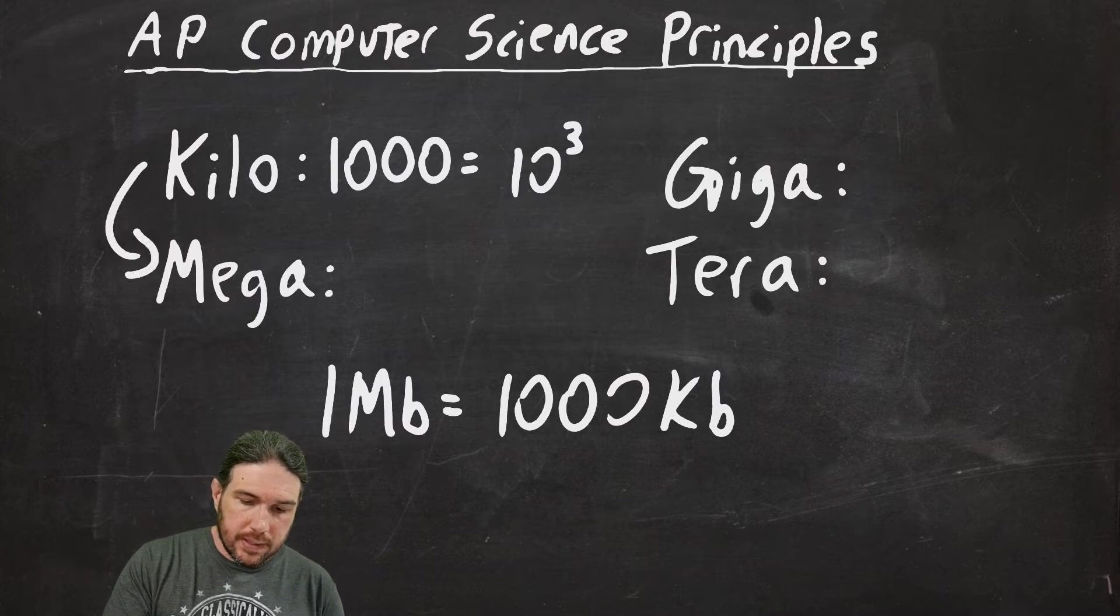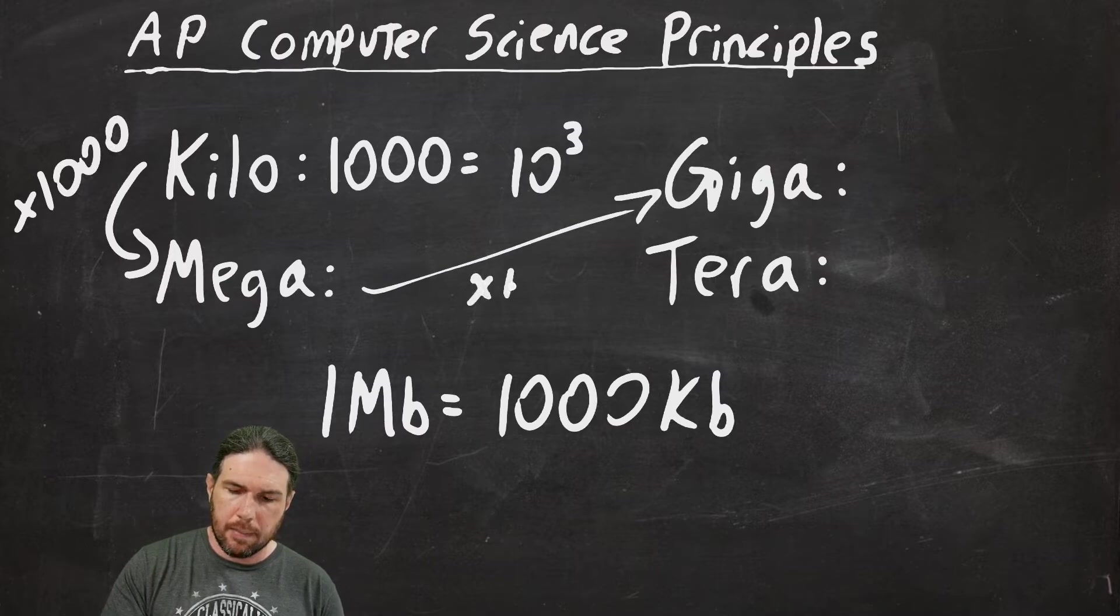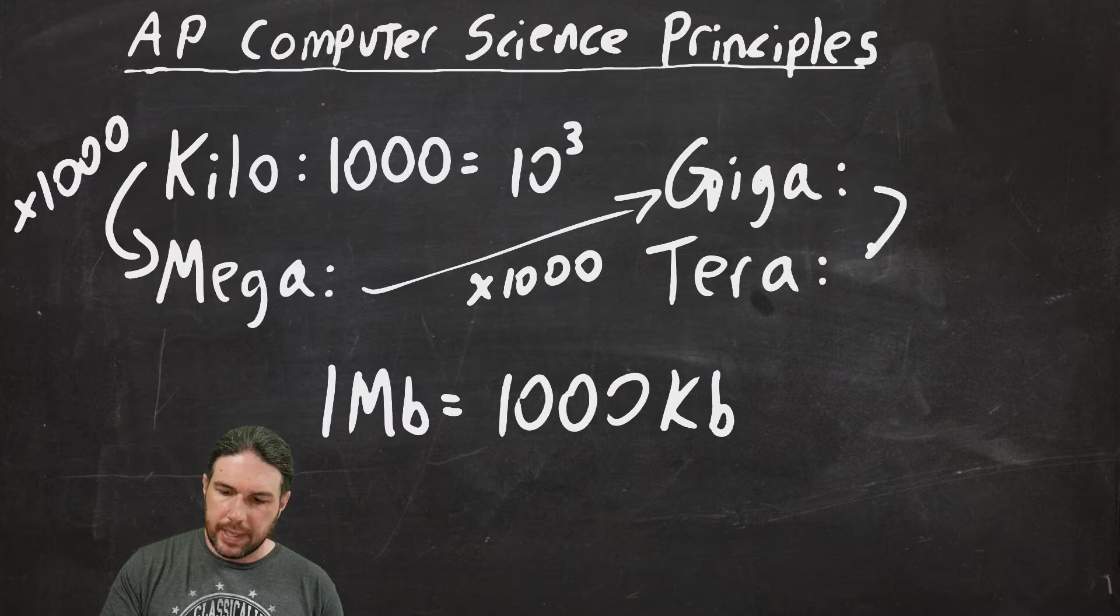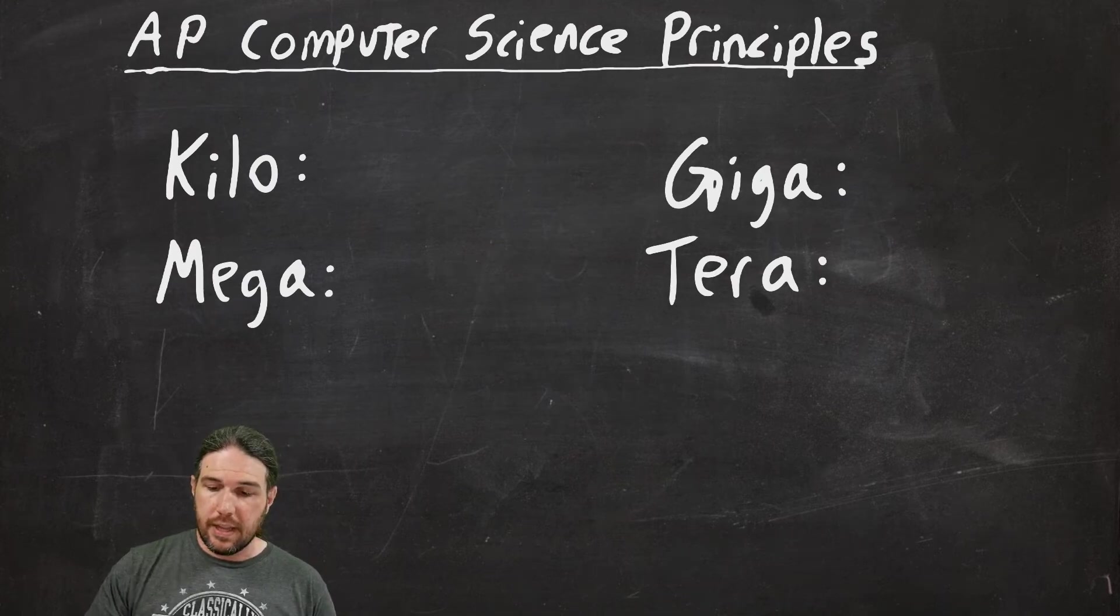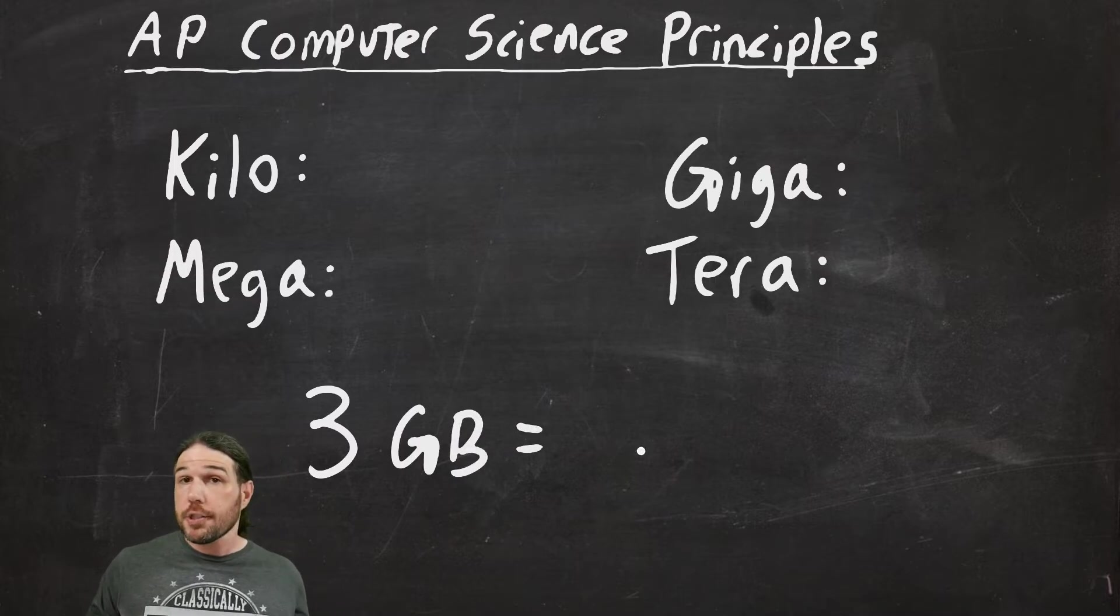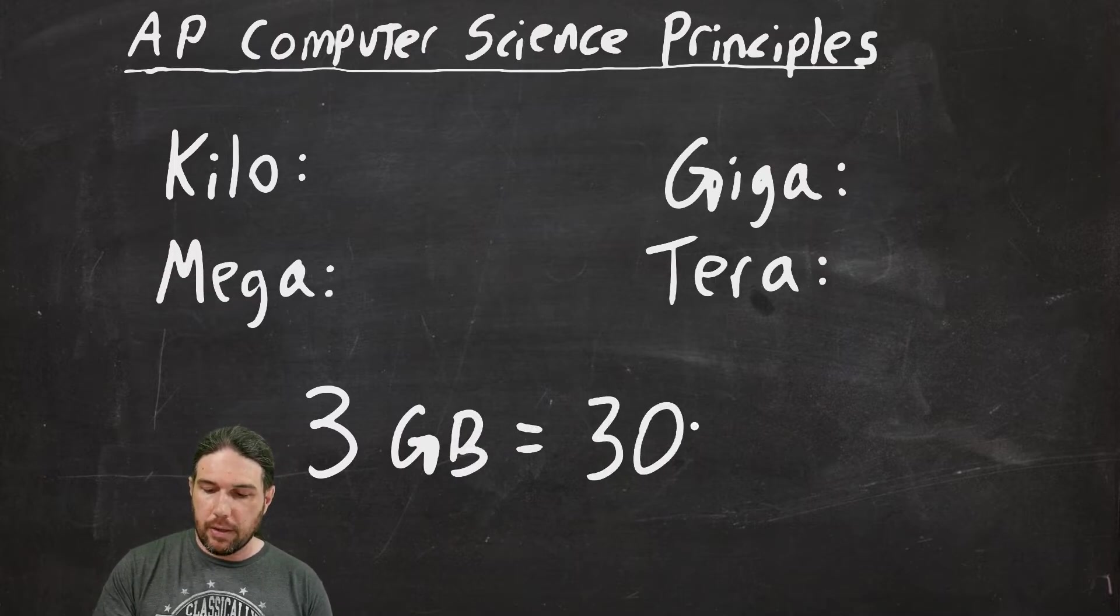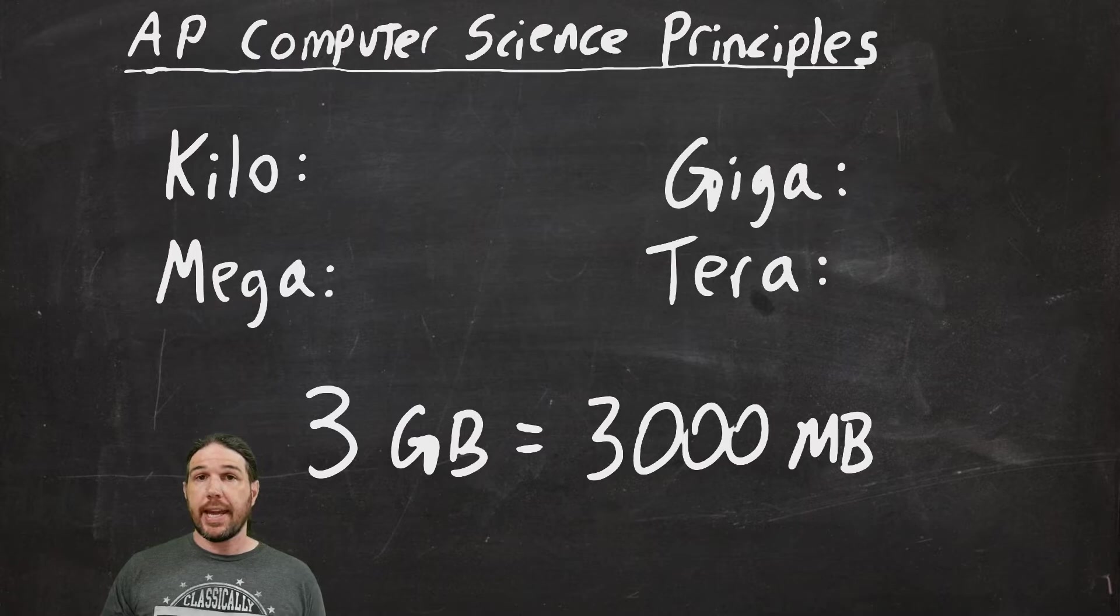From mega to giga is times one thousand. From giga to tera is times one thousand. So, for example, if I had three gigabytes, I could also call that three thousand megabytes. I hope that makes sense. It's all just multiplication and division.